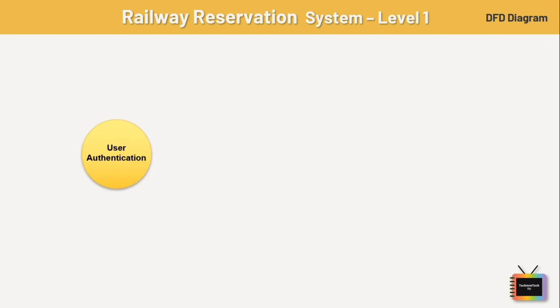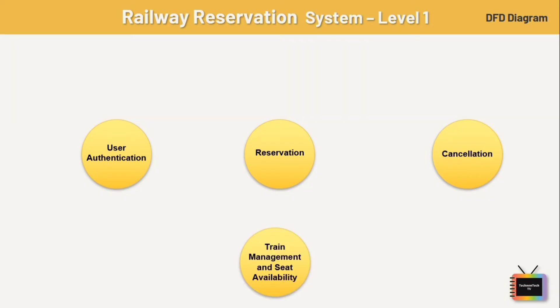First is user authentication — it basically verifies user credentials during login. Next we have the reservation process, which involves activities such as checking train availability, selecting seats, entering passenger details, and making payment, and updates the database accordingly. Next we have the cancellation process — this handles cancellation of reservations and refunds if applicable, and updates the database accordingly.